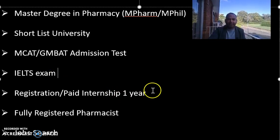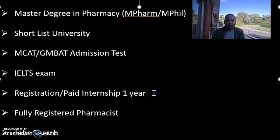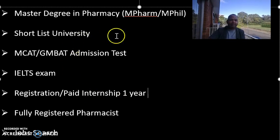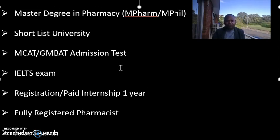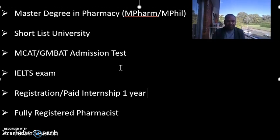After finishing this two-year course, you register with the Pharmacy Board and then go for a one-year internship. This internship is mostly paid here in Australia, so no need to worry. Even during these two years, you can work part-time in pharmacies as a pharmacy technician. Most students studying pharmacy from year one to year four, or in the Master of Pharmacy, are working as technicians. They gain experience and enough money to cover their own living expenses, though fees may require your own pocket.